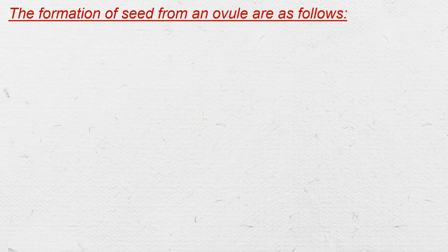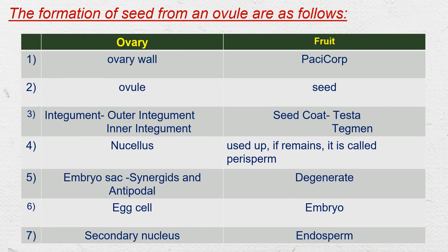Now we understand the summary of changes occurring in the formation of seed from an ovule. Ovary and fruit: ovary wall changes to pericarp; ovule changes into seed; integuments form the seed coat — outer integument becomes testa, inner integument becomes tegmen; nucellus is used up, and if it remains, it is called perisperm.